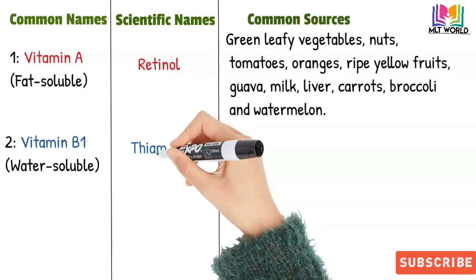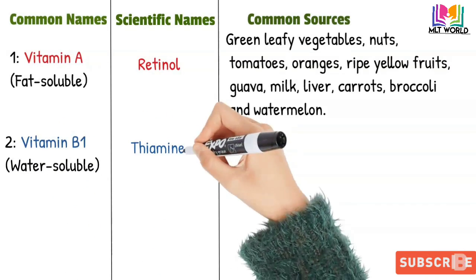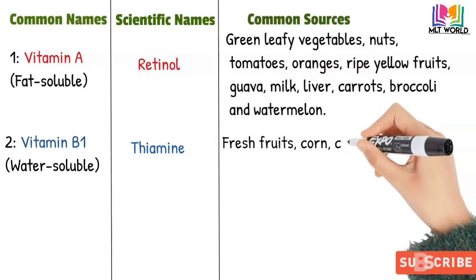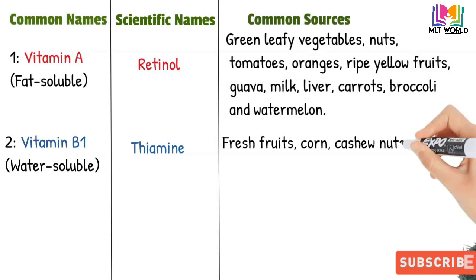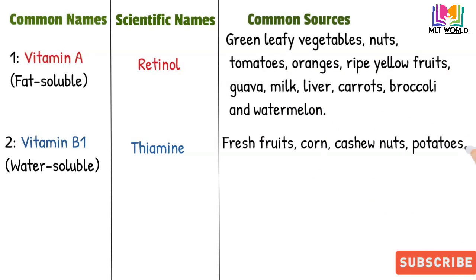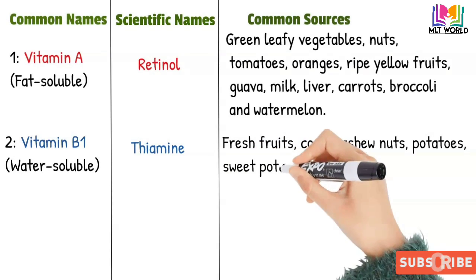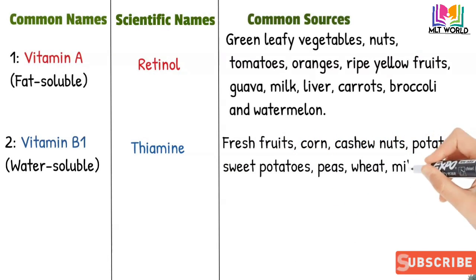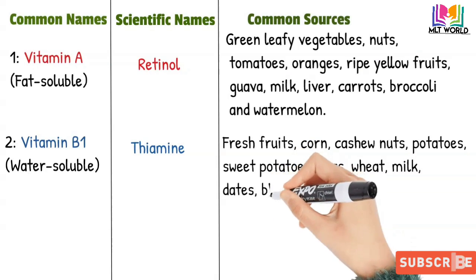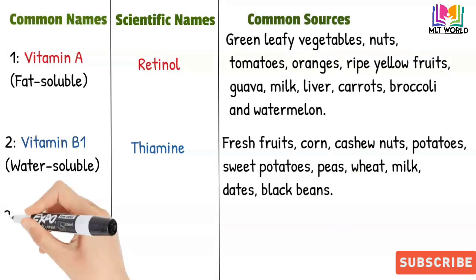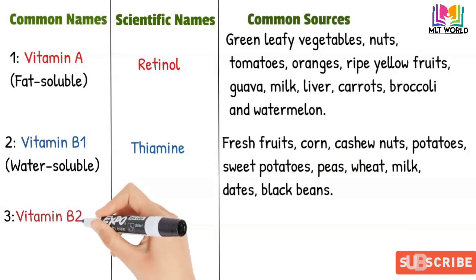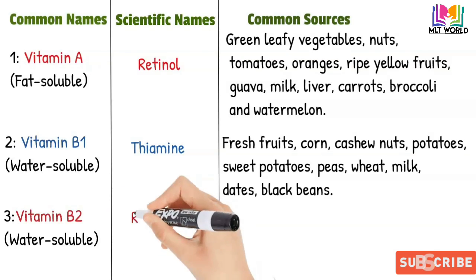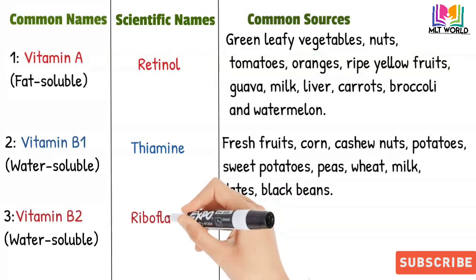The second vitamin is Vitamin B1, which is a water-soluble vitamin. Its scientific name is thiamine. Sources include fresh fruits, corn, cashew nuts, potatoes, sweet potatoes, peas, wheat, milk, dates, and black beans.